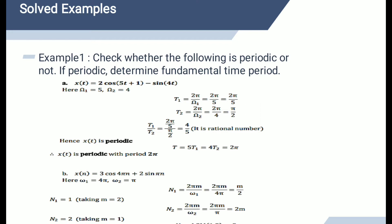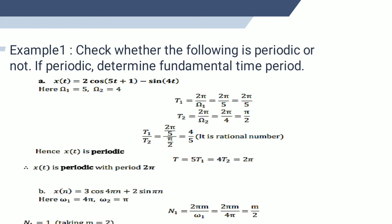Here, x(t) = 2cos(5t) + 1 - sin(4t). We have ω₁ = 5 and ω₂ = 4. T₁ = 2π/ω₁ = 2π/5, and T₂ = 2π/4 = π/2. Taking the ratio T₁/T₂ = (2π/5)/(π/2) = 4/5, which is a rational number.